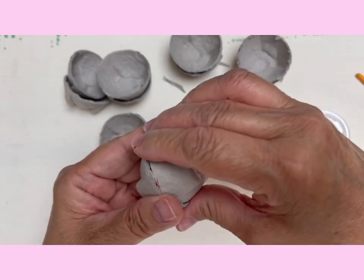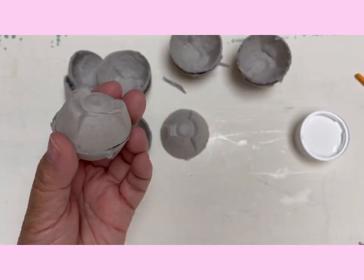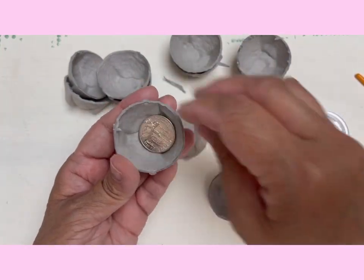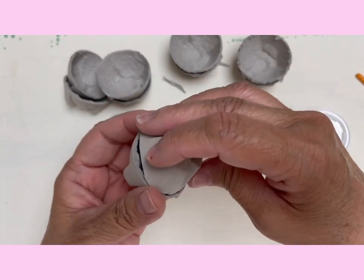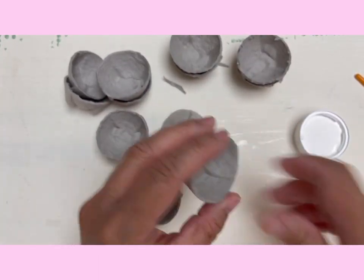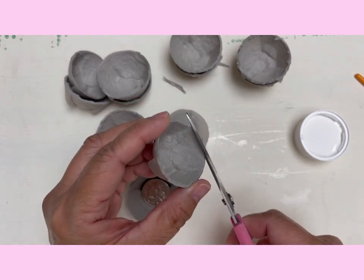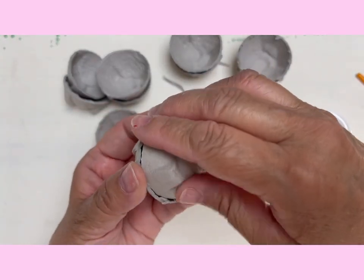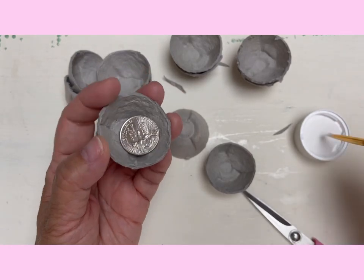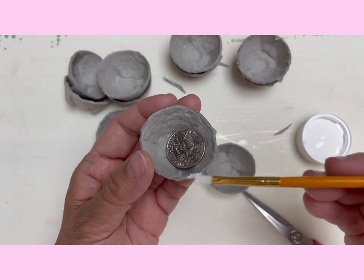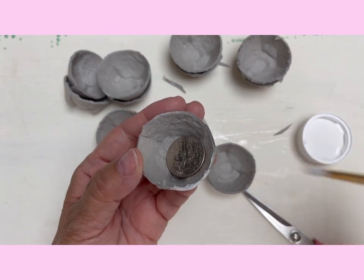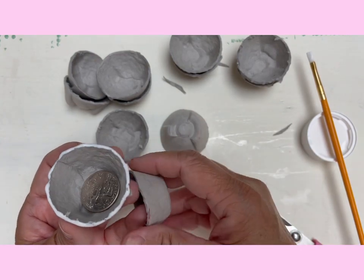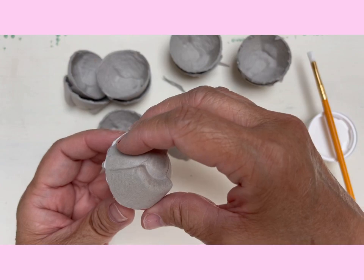So now what I'm going to do is take a quarter. This is for the Easter egg hunt, and then I will just take a brush and start gluing them. Just try to fit them together.